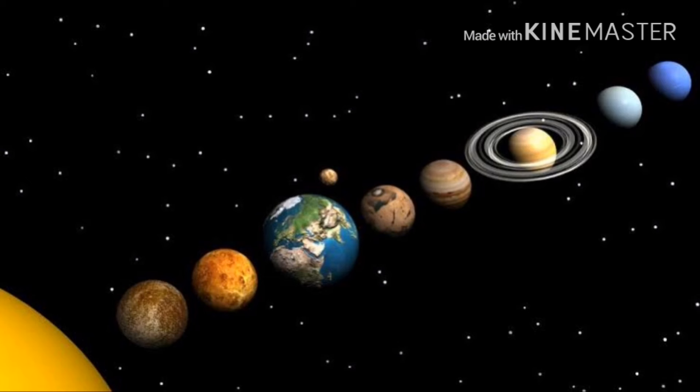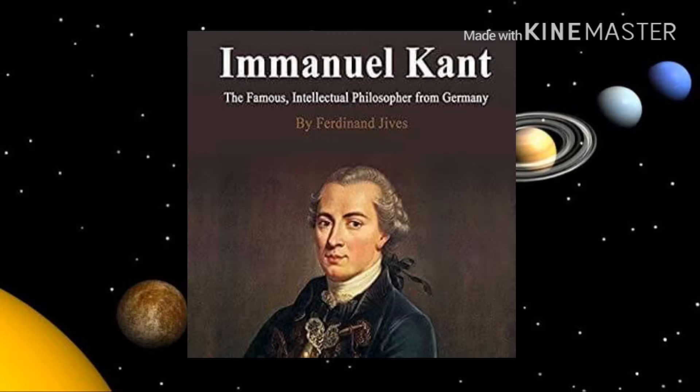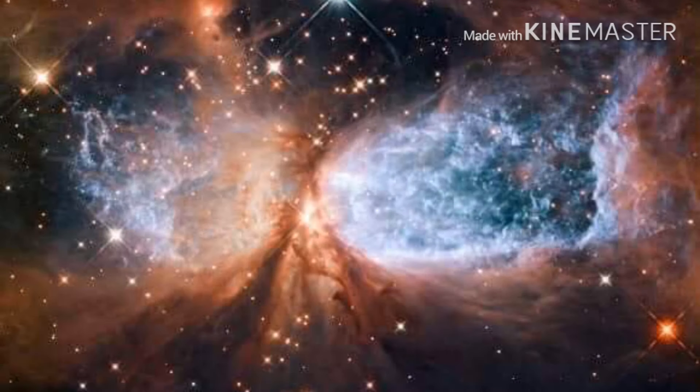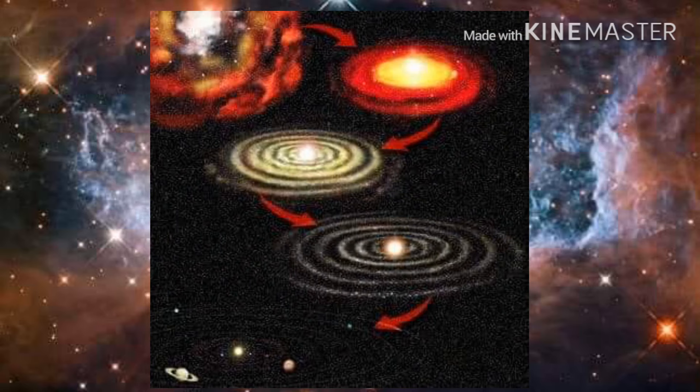Second, the Nebular Hypothesis on Star and Planets by Immanuel Kant. Thin clouds of dust and gas out of the cosmos would collapse on themselves under the force of gravity, causing them to spin to form a disk. From the spinning disk, planets and stars would form.